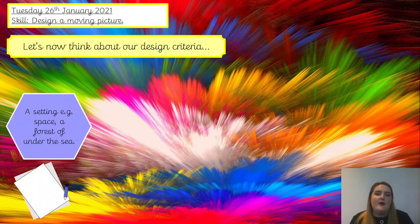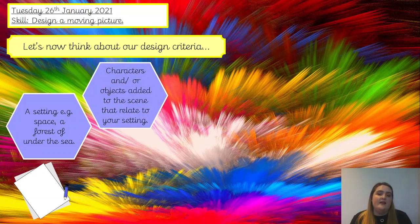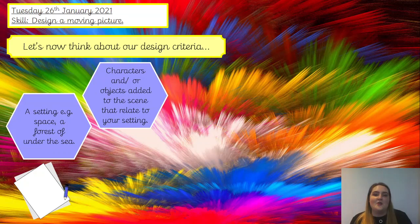Let's think then about our design criteria. When we're making our moving picture design, we need to think about a couple of things. The first thing is we need a setting — for example, space, a forest, or under the sea — and it's completely up to you what setting you use today. Once you've got your setting, you need to think about your characters or objects you're going to add to your scene, and they need to relate to your setting. There's no point in having an astronaut if your setting is under the water, for example.